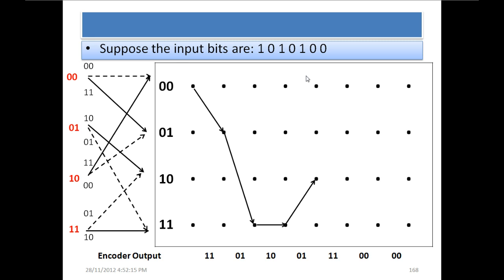Continuing: at state 1,0 with input 1, we go to state 0,0 and the output is 1,1. Then with input 0 at state 0,0, the output is 0,0 and we remain at 0,0. The final 0,0 output is to flush the encoders — to bring them back to the zero state. This is what we call flushing.